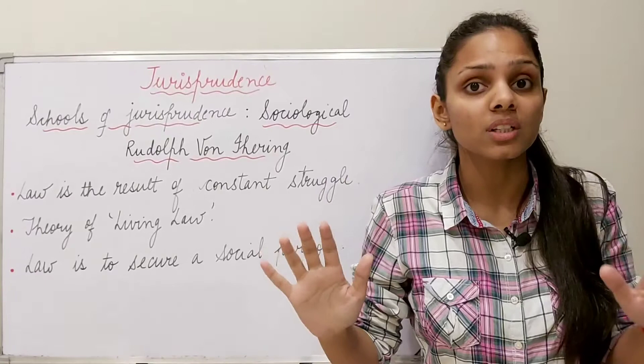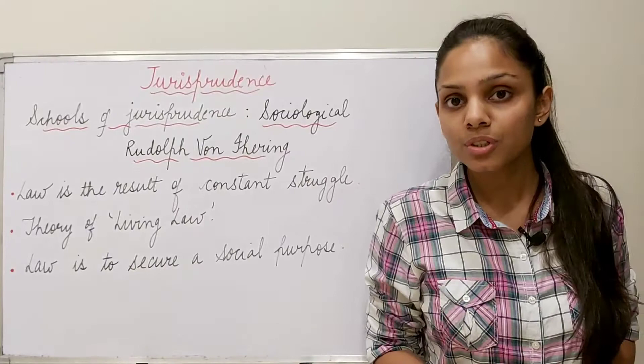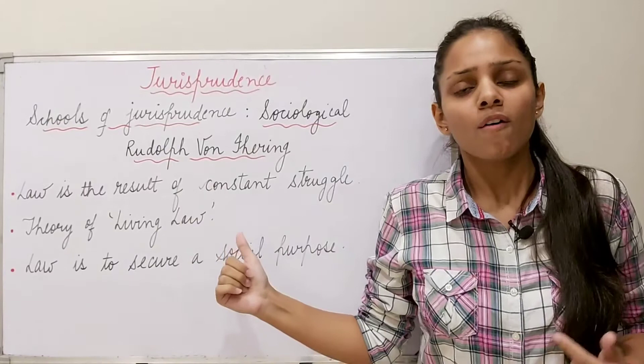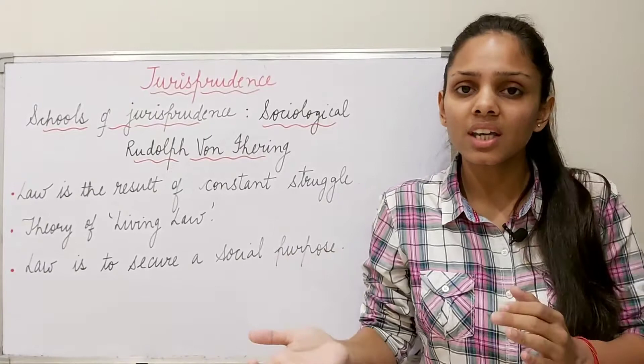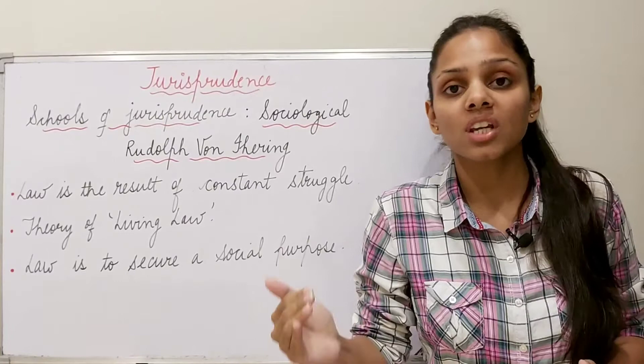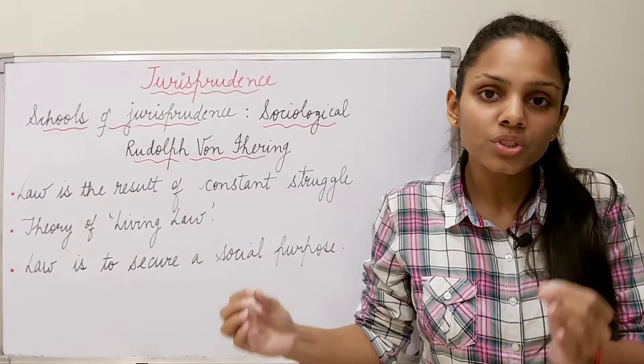Talking about the last important point, he laid emphasis on the theory of living law. Living law means the law that changes with the changing times of society — law that is not static. Because these scholars always related law to society, it is important to understand that as society progresses, law will definitely change with the changing times and needs of people. As society becomes progressive, law will also be progressive — that is what he called the theory of living law.